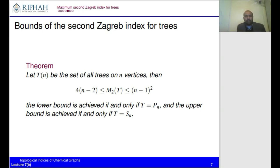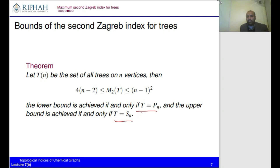Combining the result from the previous lecture and this lecture, we have the main result: for T_n, the set of all trees on n vertices, the maximum value of the second Zagreb index is (n−1)² and the minimum value is 4(n−2). The minimum is achieved when the tree is a path and the maximum is achieved when the tree is a star graph on n vertices.